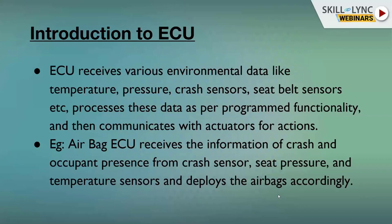Similarly, for a door control system, if a window or door is left open, you will get a notification. For the airbag ECU, it receives crash and occupant pressure information from crash sensors, as well as pressure and temperature sensor data, and deploys the airbag. If a crash event occurs, the airbag ECU detects it and deploys the airbag. This is how we can categorize different ECUs based on their functionality.